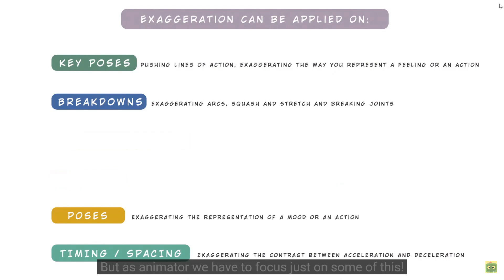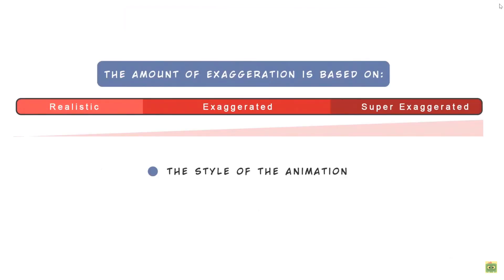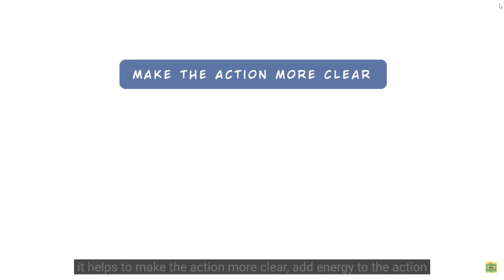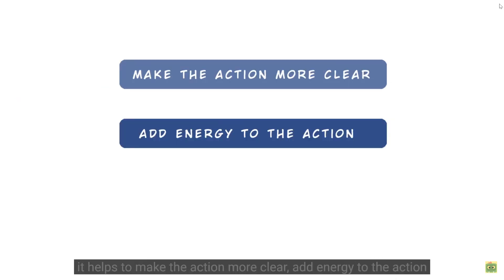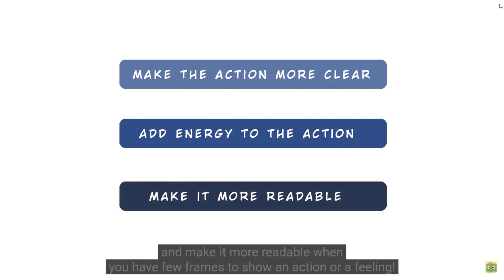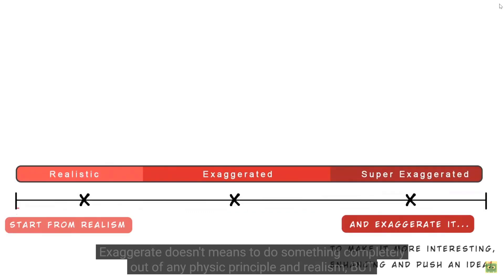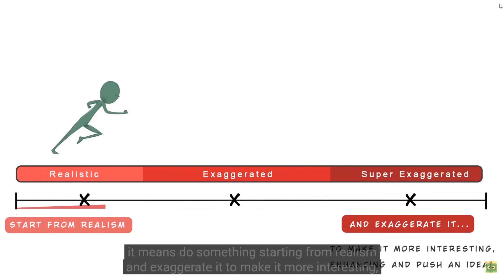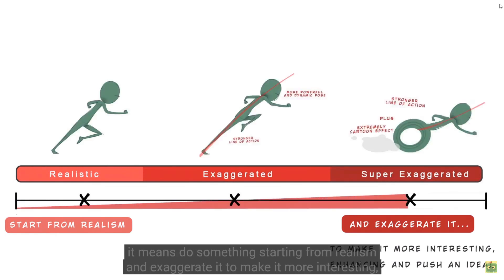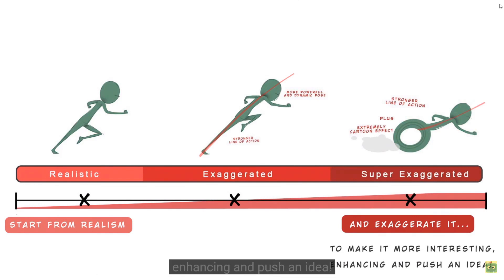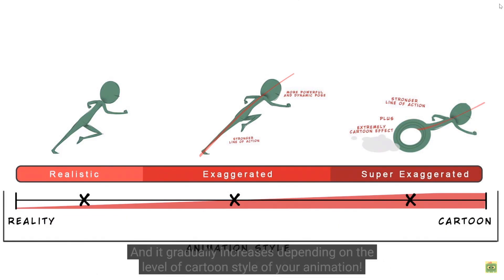But as animators, we have to focus on just some of these — and it's not as simple as the word would suggest. The amount of exaggeration is based on the style of the animation, the storyline, and the intention of the scene. When we exaggerate, we must be sure it helps make the action more clear, adds energy, and makes it more readable when you have few frames to show an acting or a feeling. Exaggeration doesn't mean doing something completely outside of physics and realism — it means starting from realism and exaggerating it to make it more interesting, enchanting, and a stronger idea. It gradually increases depending on the level of cartoon style of your animation.